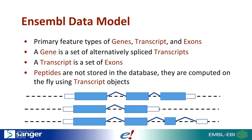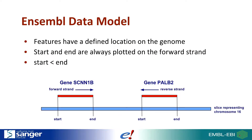In the Ensembl data model, our primary feature types are genes, transcripts and exons. A gene is defined by a set of alternatively spliced transcripts, a transcript is a set of exons, and peptides are not explicitly stored in the database — they're computed on the fly from transcript objects. Features have defined locations on the genome; start and end are always plotted on the forward strand. This means the start coordinate returned by the Ensembl APIs will always be less than the end, even if the feature is transcribed from the reverse strand.